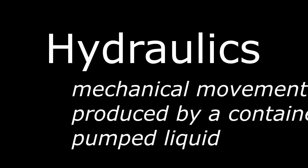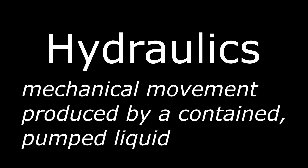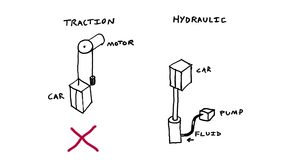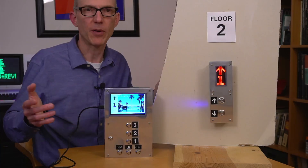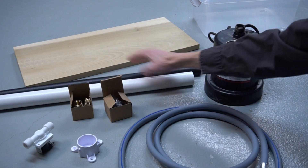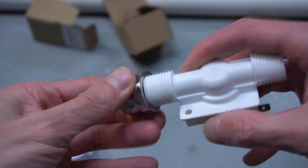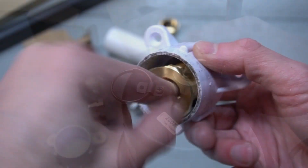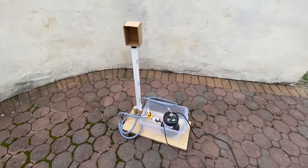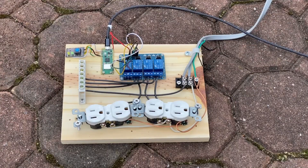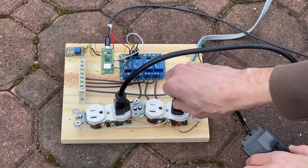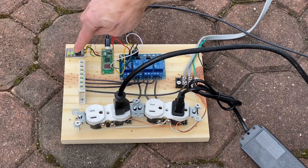This Pi elevator's lift system will be based on hydraulics, where mechanical movement is produced by a contained, pumped liquid. Instead of a big motor at the top pulling the elevator car up, we'll pump fluid into a tube to push the elevator up. That's a popular lower cost option for elevators that are only a few floors high. I gathered together a water pump, some PVC pipes and tubing, and various fittings, then set about tinkering and hacking the parts together to construct a prototype of a hydraulic elevator lift system. I built this high voltage board to control the hydraulics. It uses another Pi Pico W microcontroller to power relays that can switch 120 volts at up to 10 amps — more than enough for our hydraulic water pump and relief valve solenoid. It also communicates with the elevator car using MQTT over Wi-Fi.